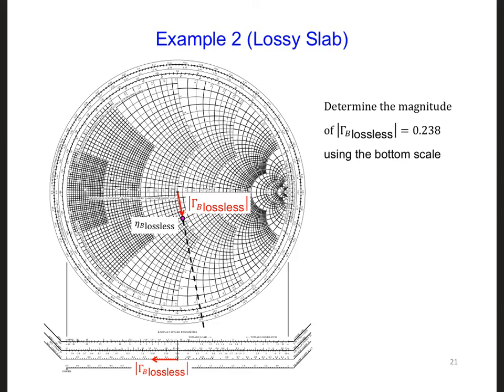We can do this using the Smith chart by first reading off the reflection coefficient magnitude from the Smith chart. So here finding how long this red vector is, and measuring out, just as you did for Smith transmission lines, the same distance using the scale here, reflection coefficient e or i. And if we do this, we get a reflection coefficient of 0.238. That's the magnitude for the lossless case.